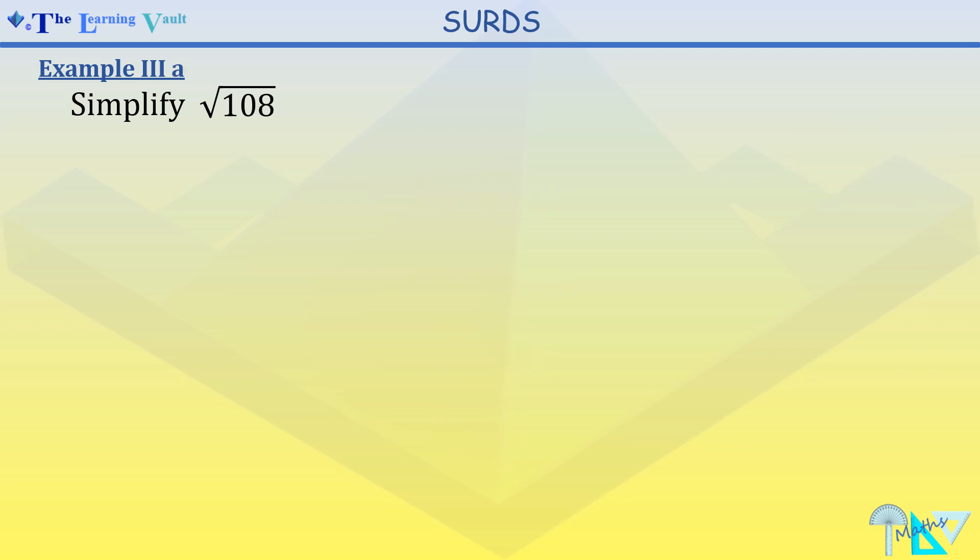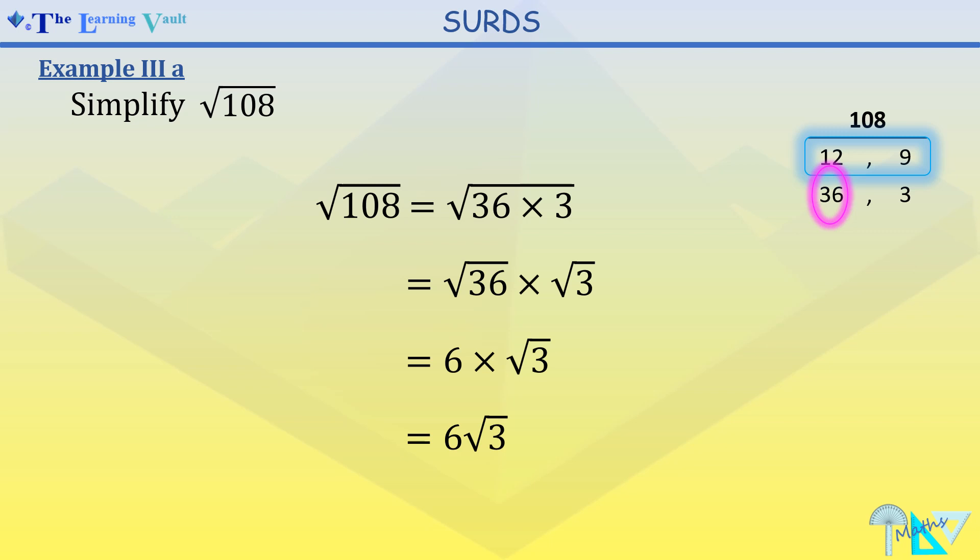For a final example, we've got to simplify 108. Our factors of 108, we have two scenarios here where we do have a square number here and a square number here. We're going to use the one with the largest square number. Simplifying and leaving our answer in surds, our answer is 6 square root of 3.